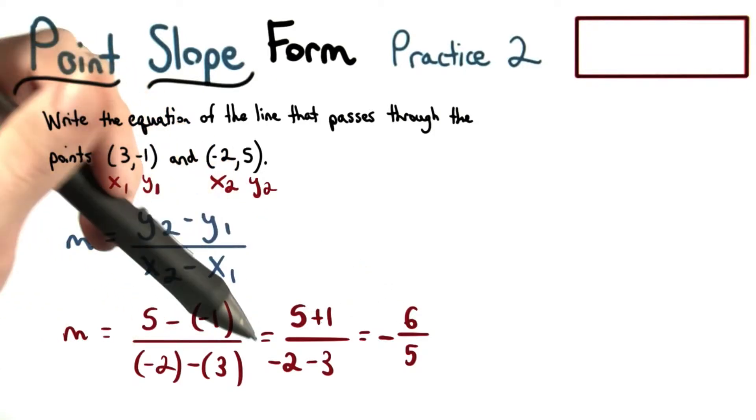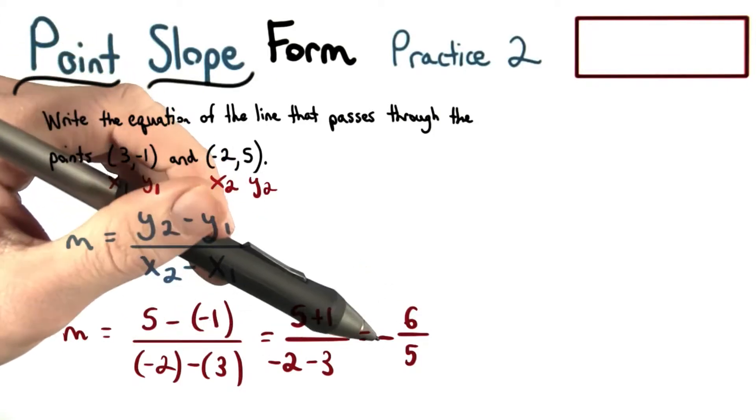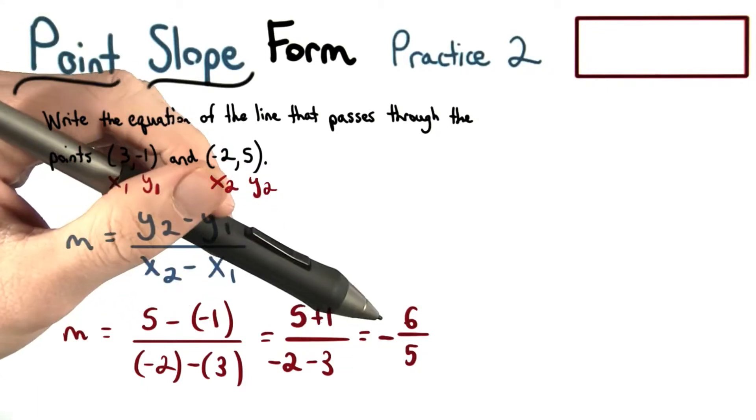5 plus 1 makes 6, and negative 2 minus 3 is negative 5. So we have negative 6 fifths as our slope.